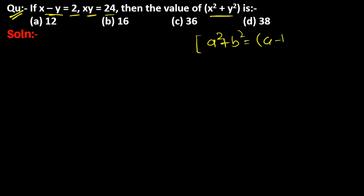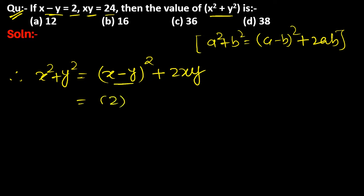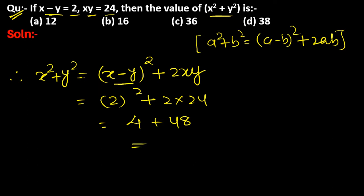Therefore, x squared plus y squared equals x minus y, whole squared, plus 2xy. Substituting the values: 2 squared plus 2 into 24 equals 4 plus 48, which equals 52. So option B is the correct answer.